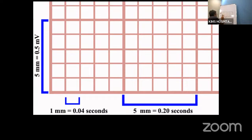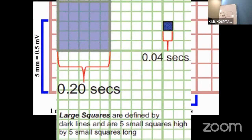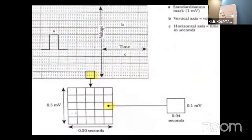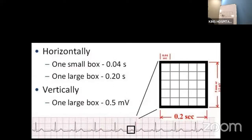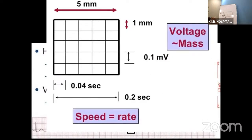In the vertical plane, one small box is 0.1 millivolt, and one large box is 0.5 millivolt. To summarize: horizontal axis is time — one small box is 0.04 second, one large box is 0.2 second; vertical axis is voltage — one large box is 0.5 millivolt, one small box is 0.1 millivolt. Remember: vertical axis = voltage (V for voltage, V for vertical).